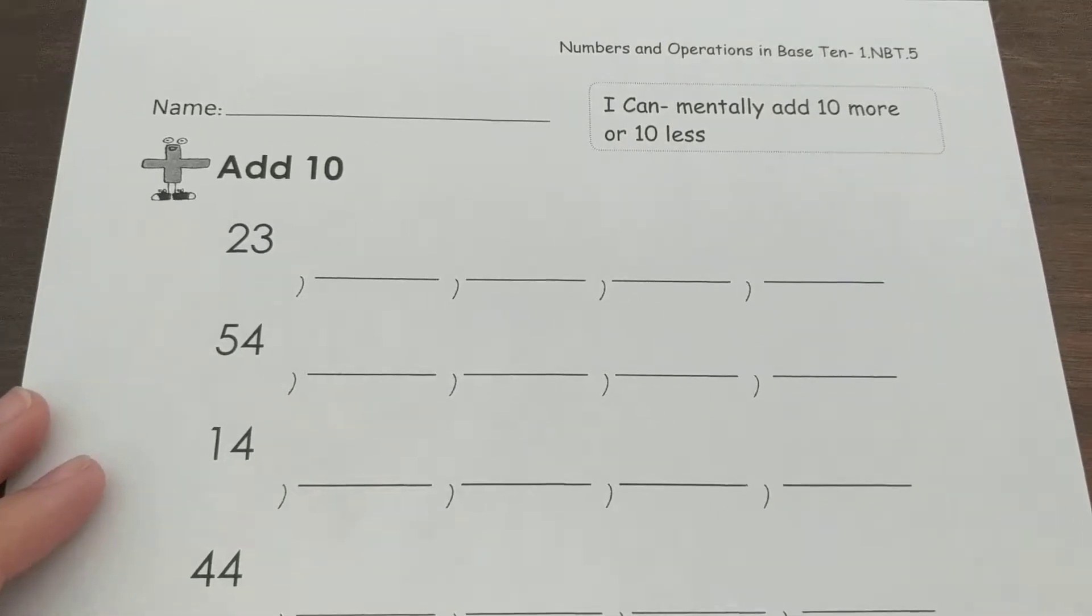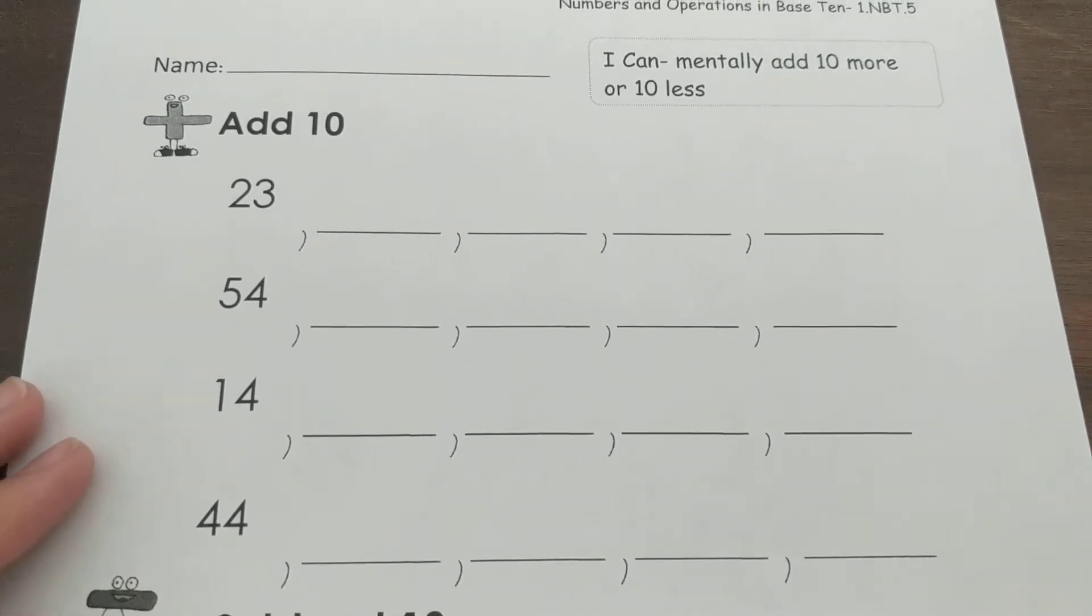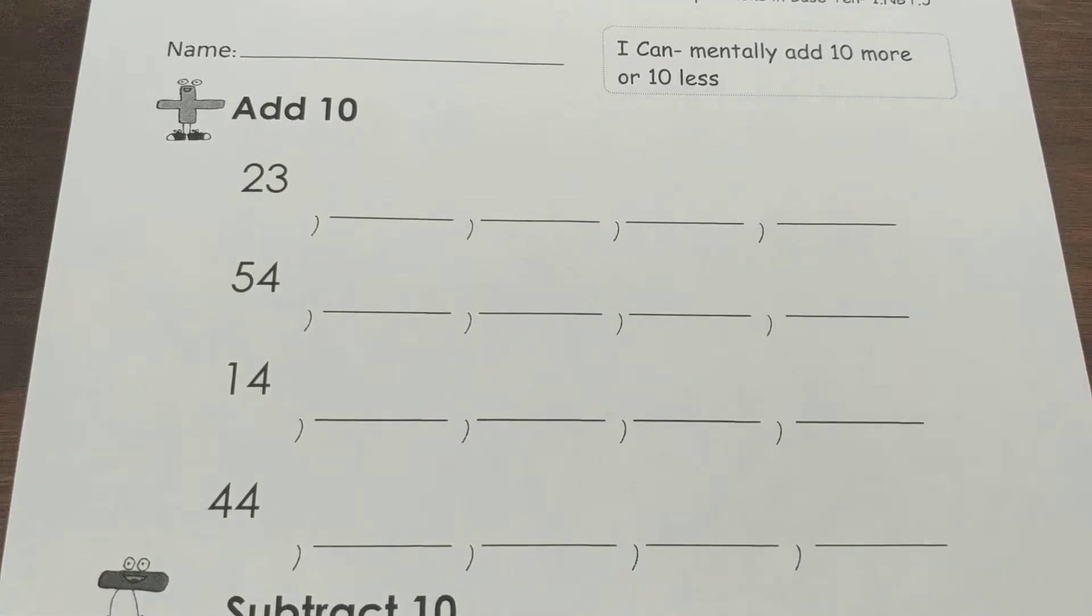Here is your at your seat paper for week number 35. It says I can mentally add 10 more or 10 less. So at the top section we're going to be adding 10 every time. 10 more, touch the floor.